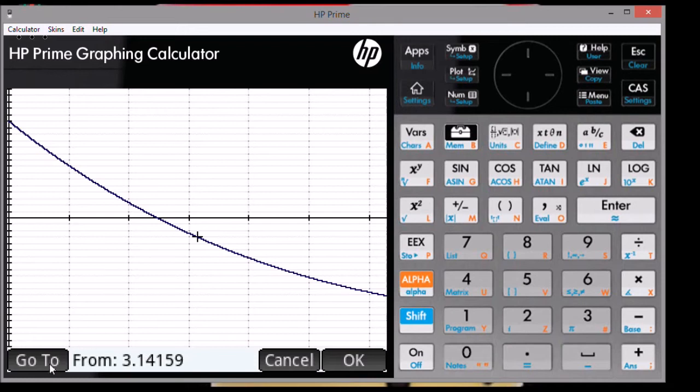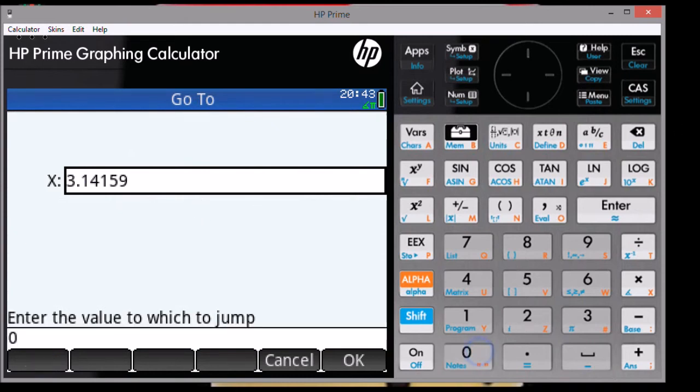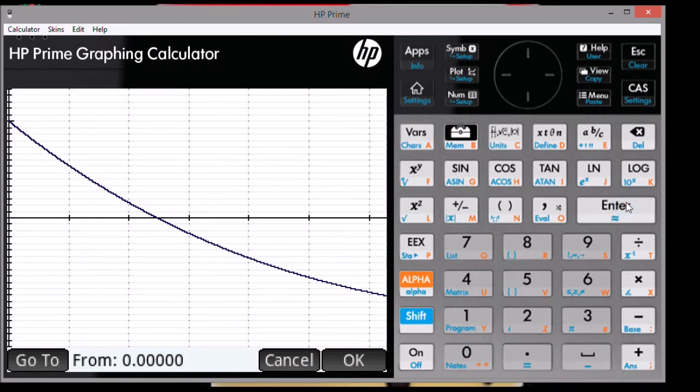I recommend that you use the go to option. That way you can enter exactly the upper limit and lower limit without having to trace. So we'll start with the go to soft button. You're going to be prompted for the lower limit. I'm going to enter zero. You can press the enter key or the soft OK key. I'm going to accept that.